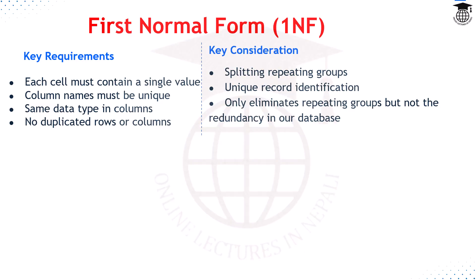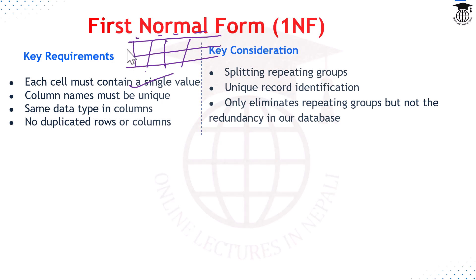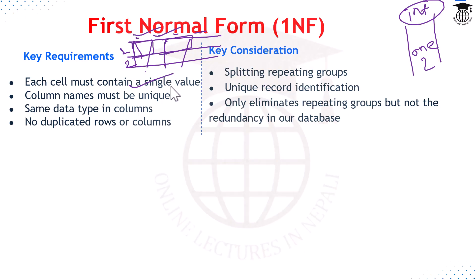For a relation to be in first normal form, the key requirements are: each cell must contain a single atomic value, column names must be unique — meaning no two columns can share the same attribute name — all values in a column must be of the same data type, and there must be no duplicated rows or columns.